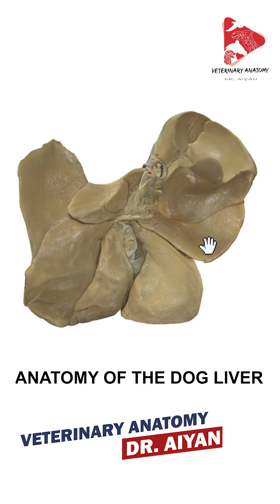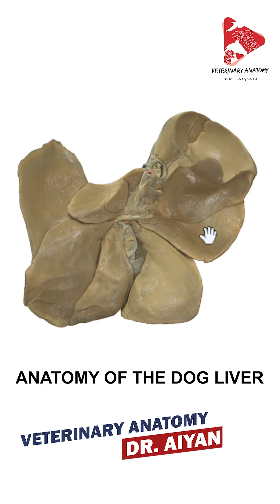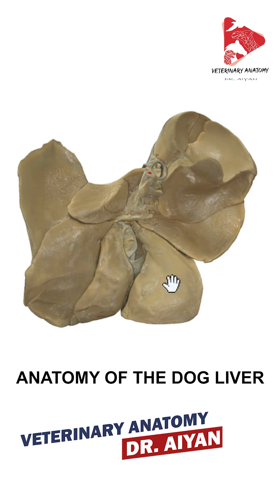The right hepatic lobe is divided in the dog, as it is a carnivore, into two parts: the lateral and the medial right hepatic lobe. The lateral part is located next to the caudate process or next to the abdominal wall in this area. The one more to the medial side is the medial right hepatic lobe.